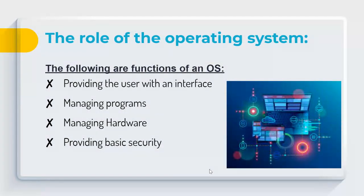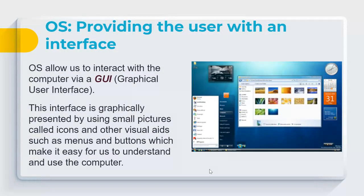The role of the operating system includes providing the user with an interface — Windows 10 uses a graphical user interface (GUI). The GUI presents graphics using icons, menus, buttons, and tiles, making the computer easier to use. Previously, users had to type commands on a black screen; now you can simply double-click to open a program, which is far more intuitive and quicker to learn.